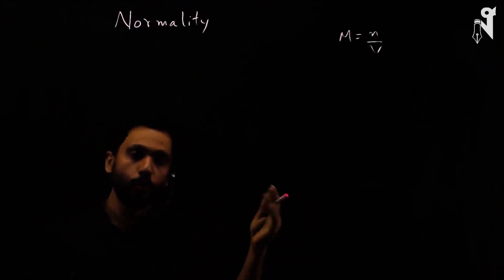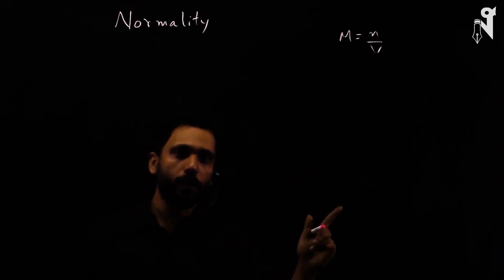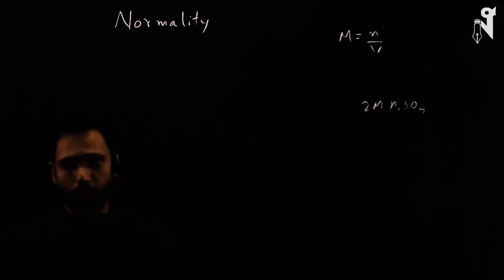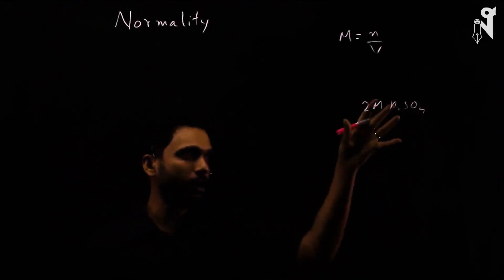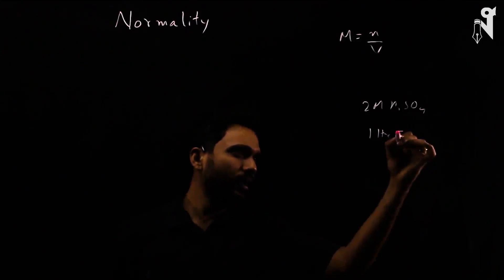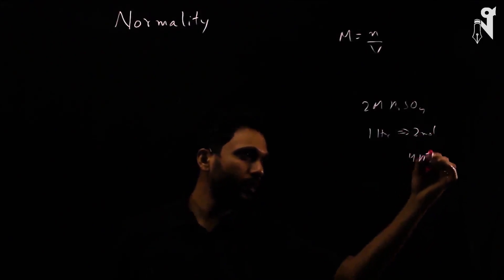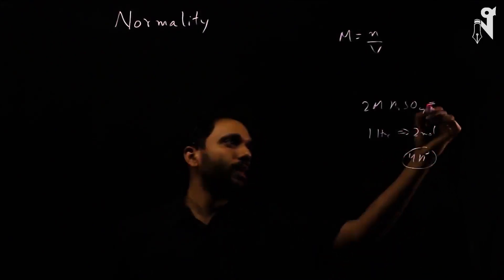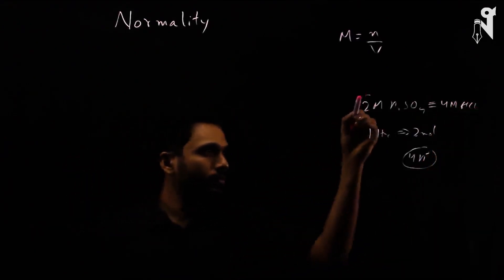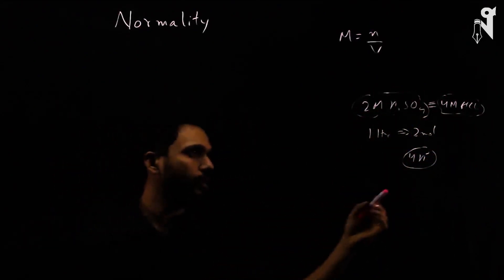For example, a 2 molar H₂SO₄ means two moles of H₂SO₄ in one liter. How many equivalents of H₂SO₄ is that? In one liter you have two moles of H₂SO₄, but you have four H⁺ ions — that is equivalent to 4 molar HCl. Two moles of H₂SO₄ is as good as four moles of HCl.